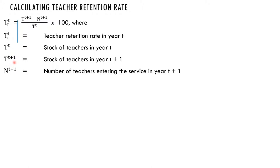Then you have t plus 1, which means the stock of teachers in year t plus 1, the following year. For example, if year t is 2000, year t plus 1 will be 2001. Then N^(t+1) is the number of teachers entering the service in year t plus 1. If the base year t is 2000, year t plus 1 will be 2001; if the base year t is 1999, year t plus 1 will be 2000, and so on. If year t is 2017, year t plus 1 will be 2018. So year t plus 1 is always the following year.